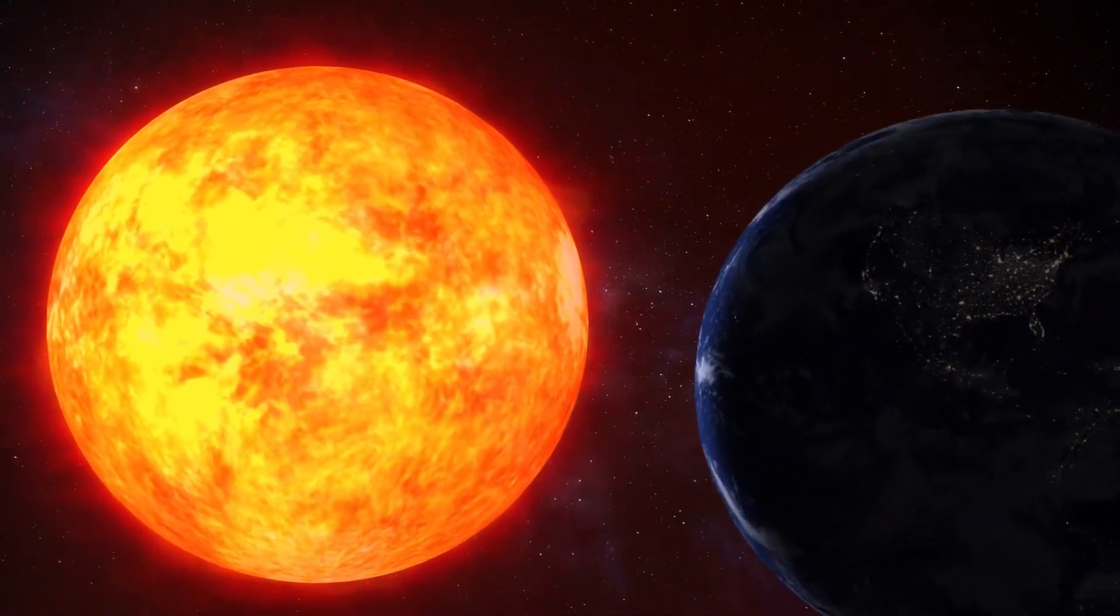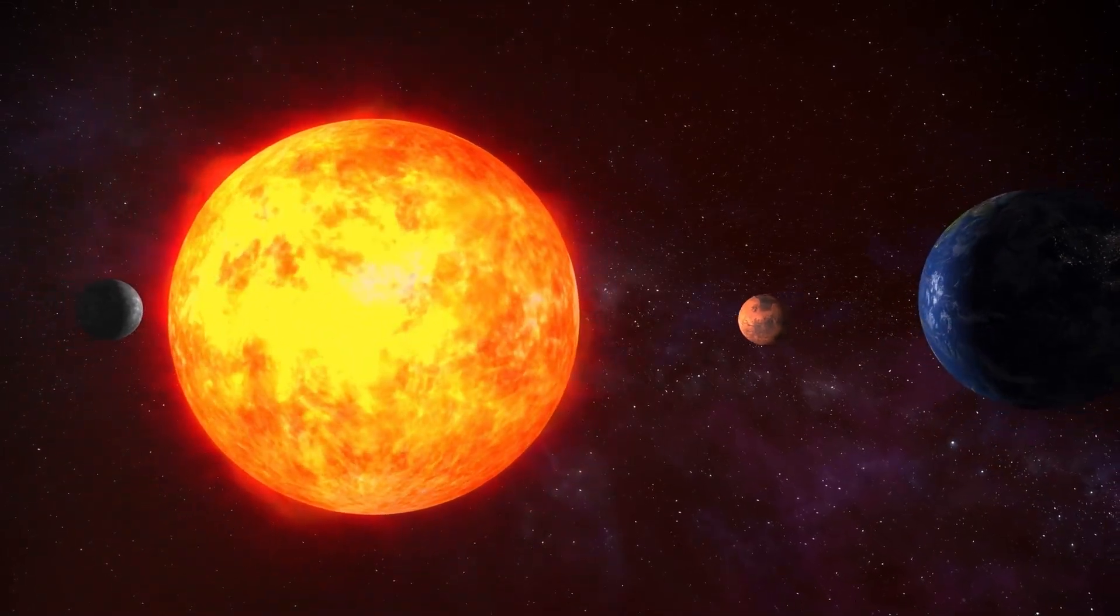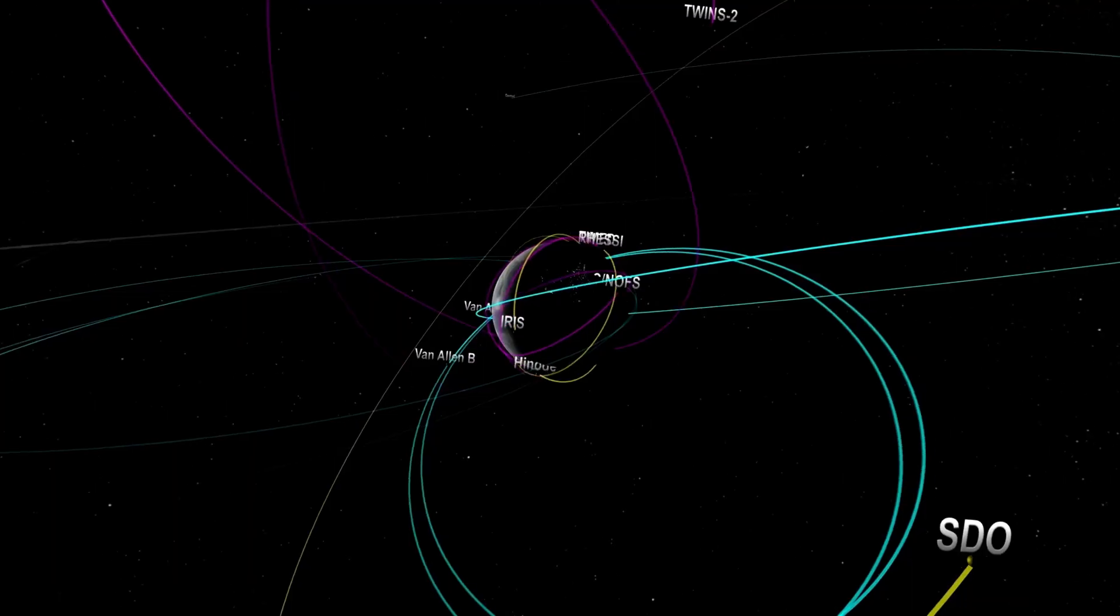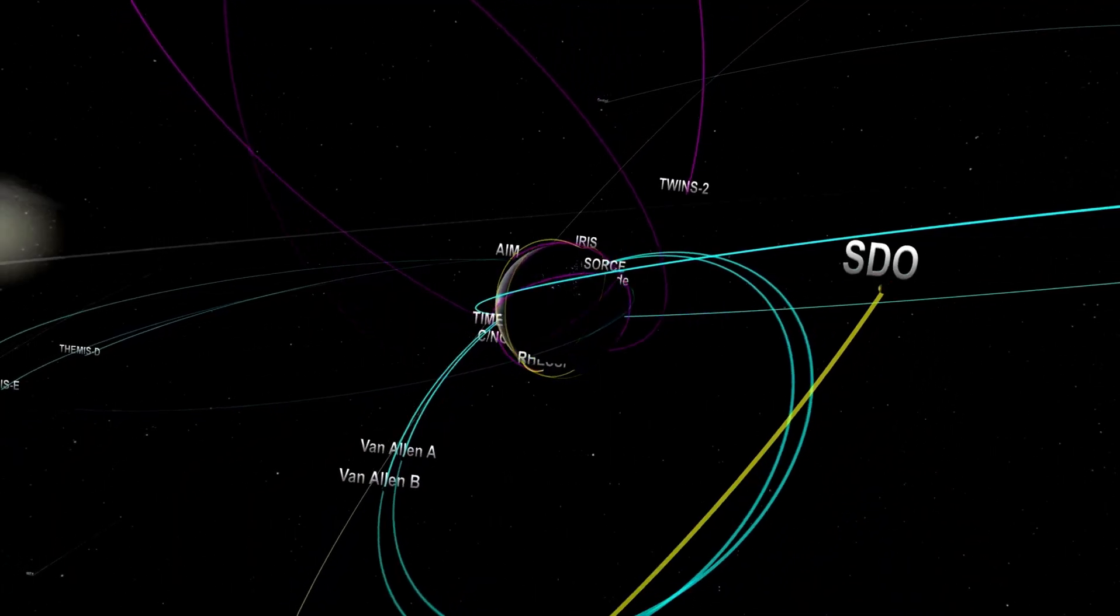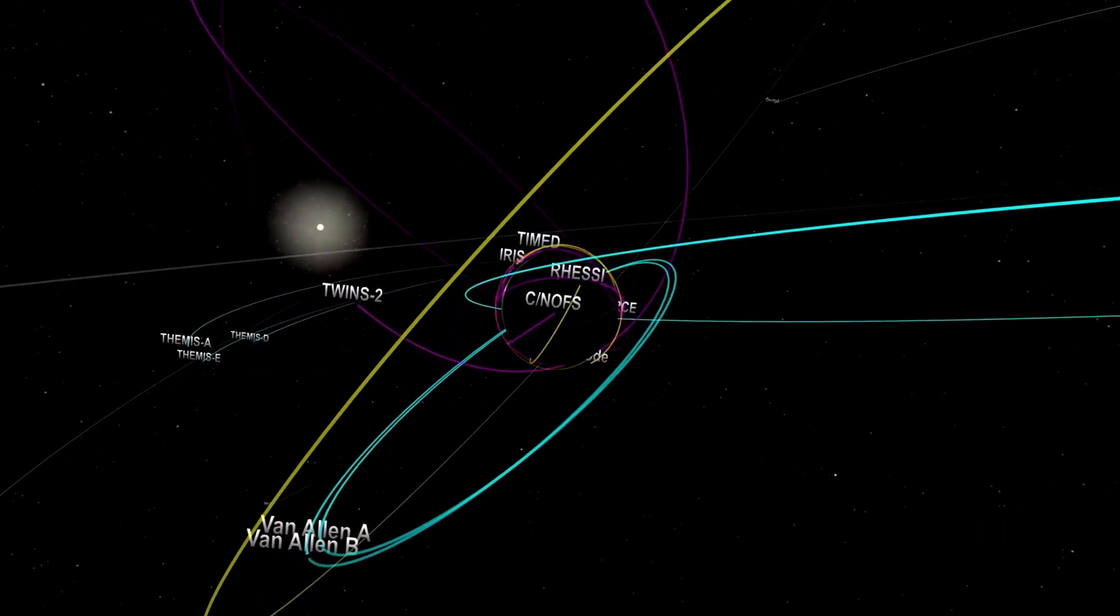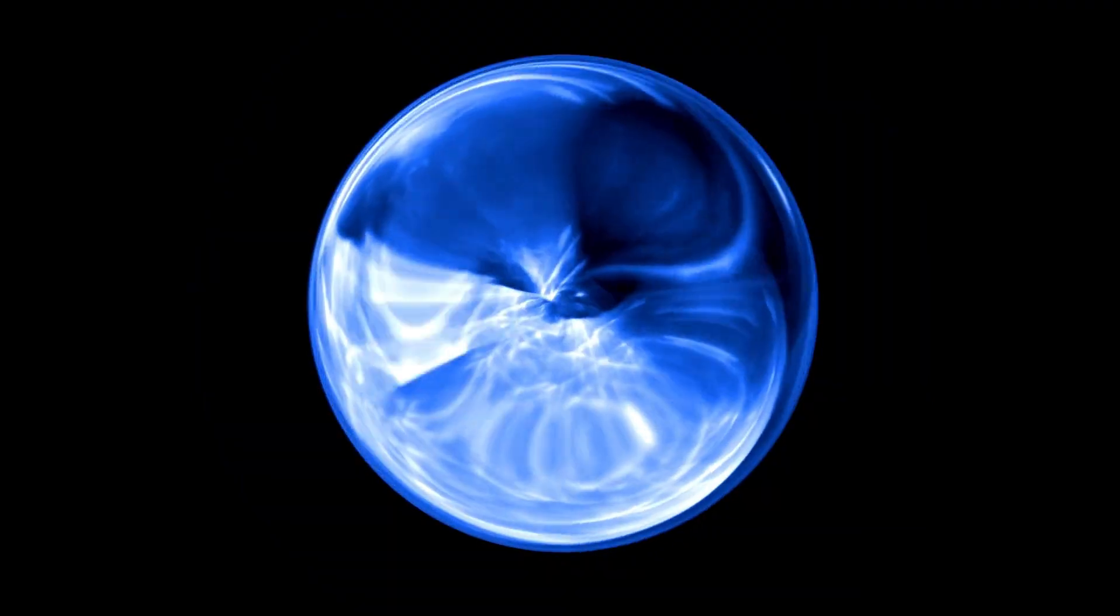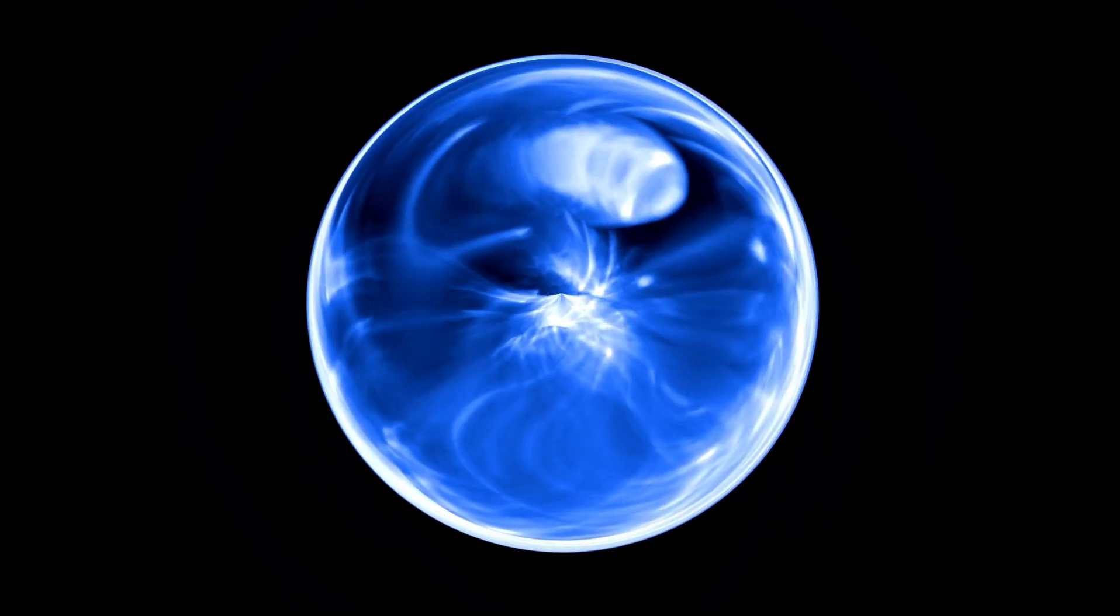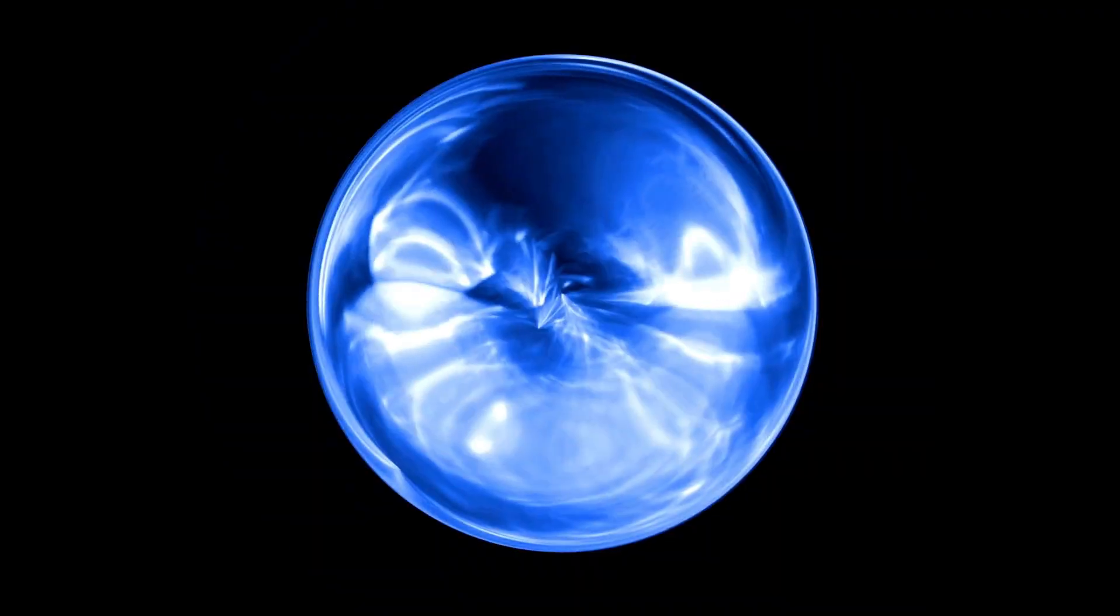Voyager 2's energy supply is gradually depleting. NASA technicians have been powering off instruments sequentially to save power. Around the mid-2030s, the spacecraft will go quiet, but even at that time it will still drift outward, circling the galaxy's center for billions of years.